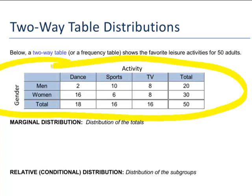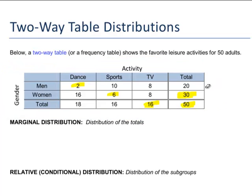If we want to know how many men that dance, we had two of those. If we want to know how many women that like sports, we had six of those. It also tells us some of these totals. How many women total did we have? We had 30 women total. How many total TV viewers did we have? We had 16. How many total people in our survey did we have? We had 50 in total. That is a two-way table and it's always for categorical data.